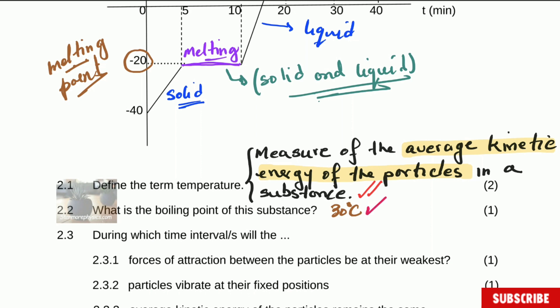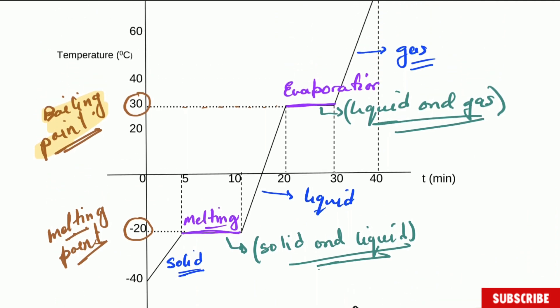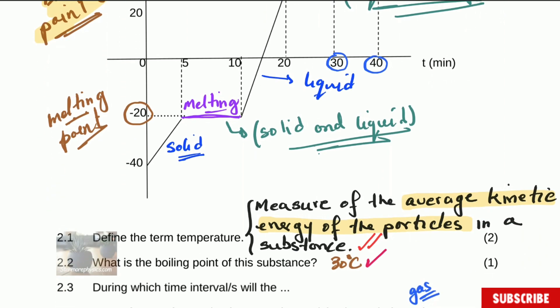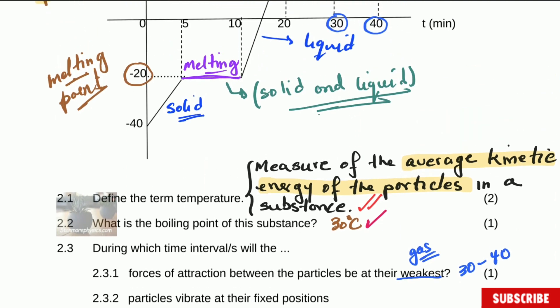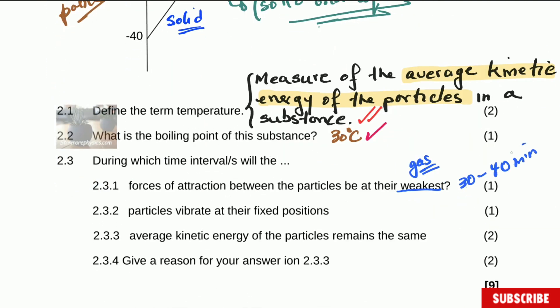During which time intervals will the force of attraction between the particles be at the weakest? The weakest forces will always be in the gas state. The gas state is starting at 30, so it is from 30 to 40 minutes. They say during which time intervals, so you have to say 30 to 40 minutes. You need to know that the forces are always the weakest in the gas state.